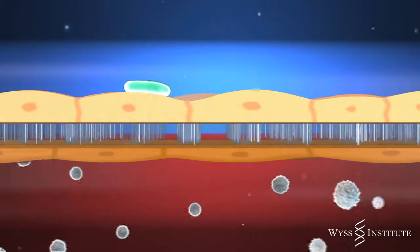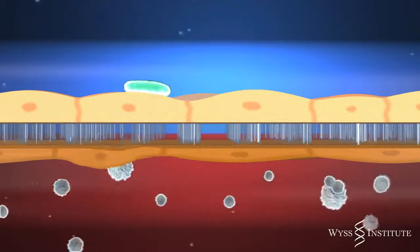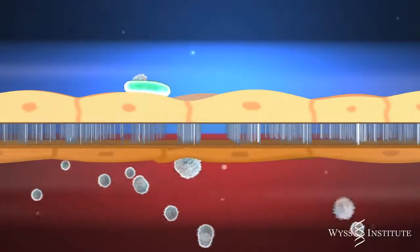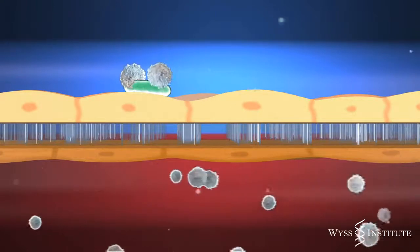We then saw the white blood cells migrate across the capillary cell layer, through the pores of the central membrane, and into the air space where they engulfed the bacteria.